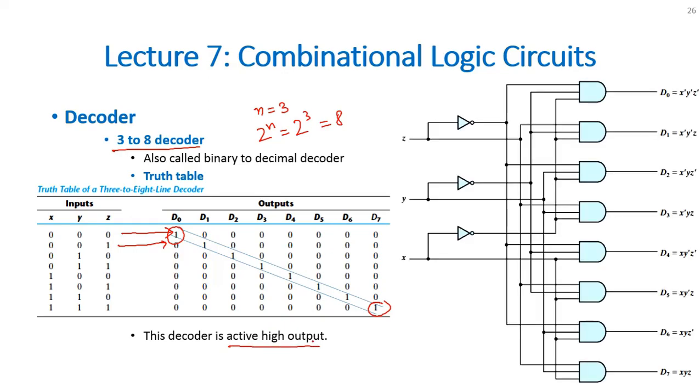To implement this truth table we need to write the K-map or we can also write the SOP expression. The SOP expression for this will be X bar, Y bar, Z bar because all other inputs are 0, and for this one would be X bar, Y bar, Z, X bar, Y, Z bar.